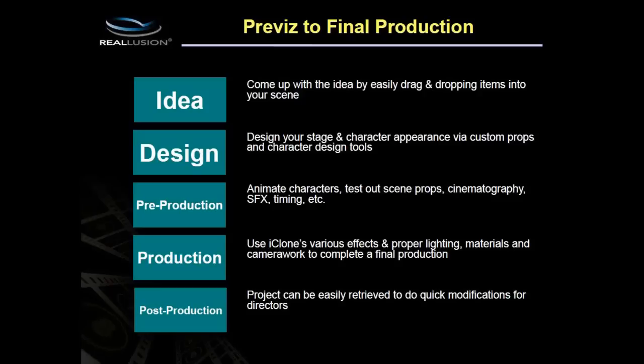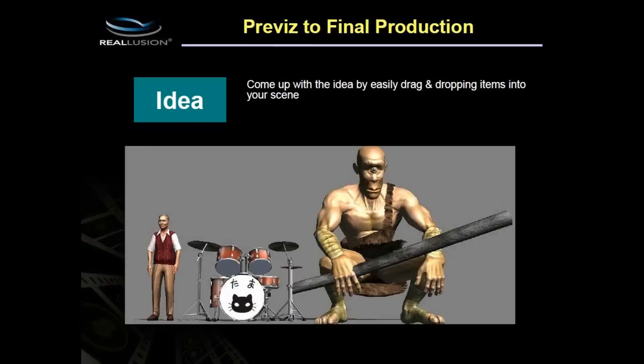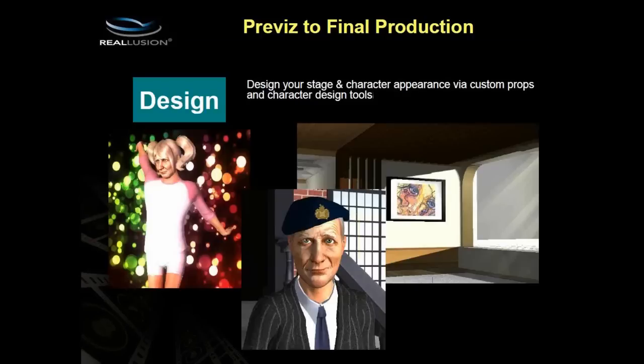In the idea stage, you just click and drag things onto your scene. For example, you could have three random items — a big troll, an old gentleman, and a drum set — and think about how these characters could work together. That's where your ideas come from, and for iClone it's really easy to just click and drag those items into your scene.